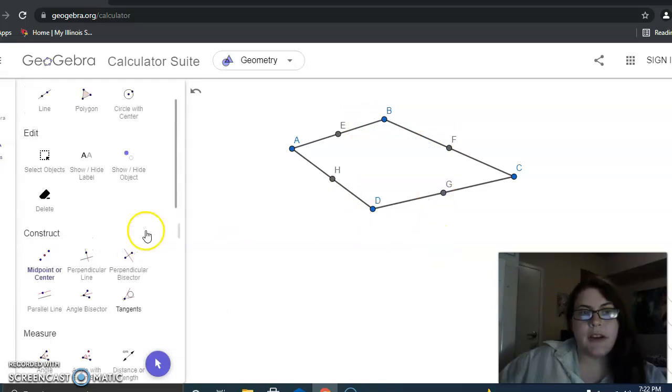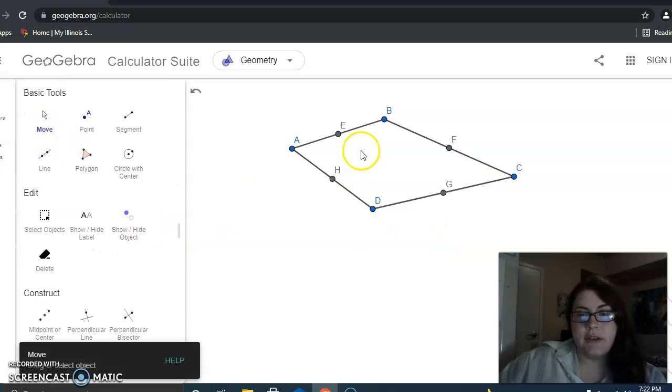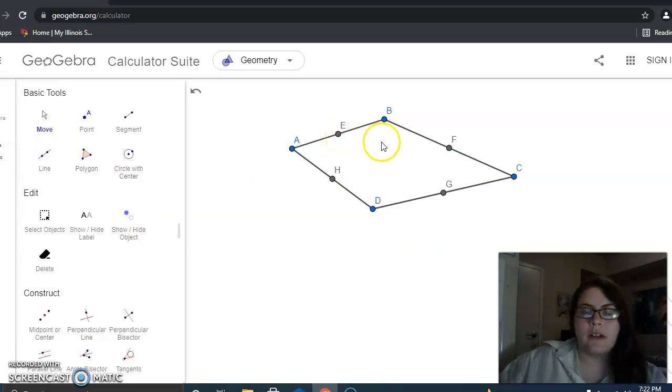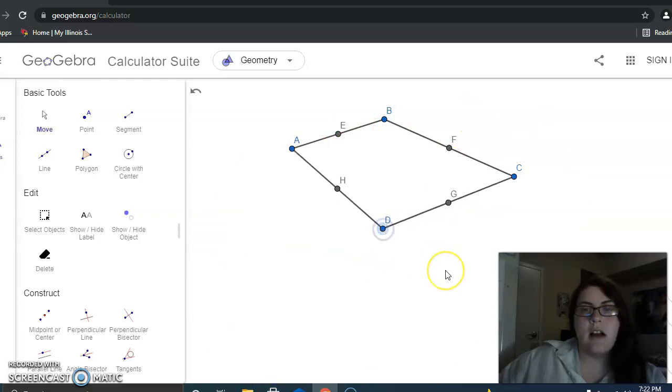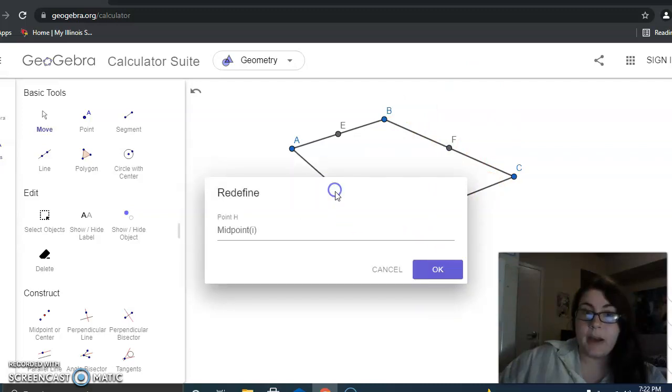I do want to point out here the difference between the midpoints and the endpoints, at least when you're using GeoGebra. Now, with the endpoints, you will notice that they're colored blue. This means you're able to adjust them however you like. However, these midpoints are colored gray and you cannot move them no matter how much you try, no matter how many times you click, you will never move these.